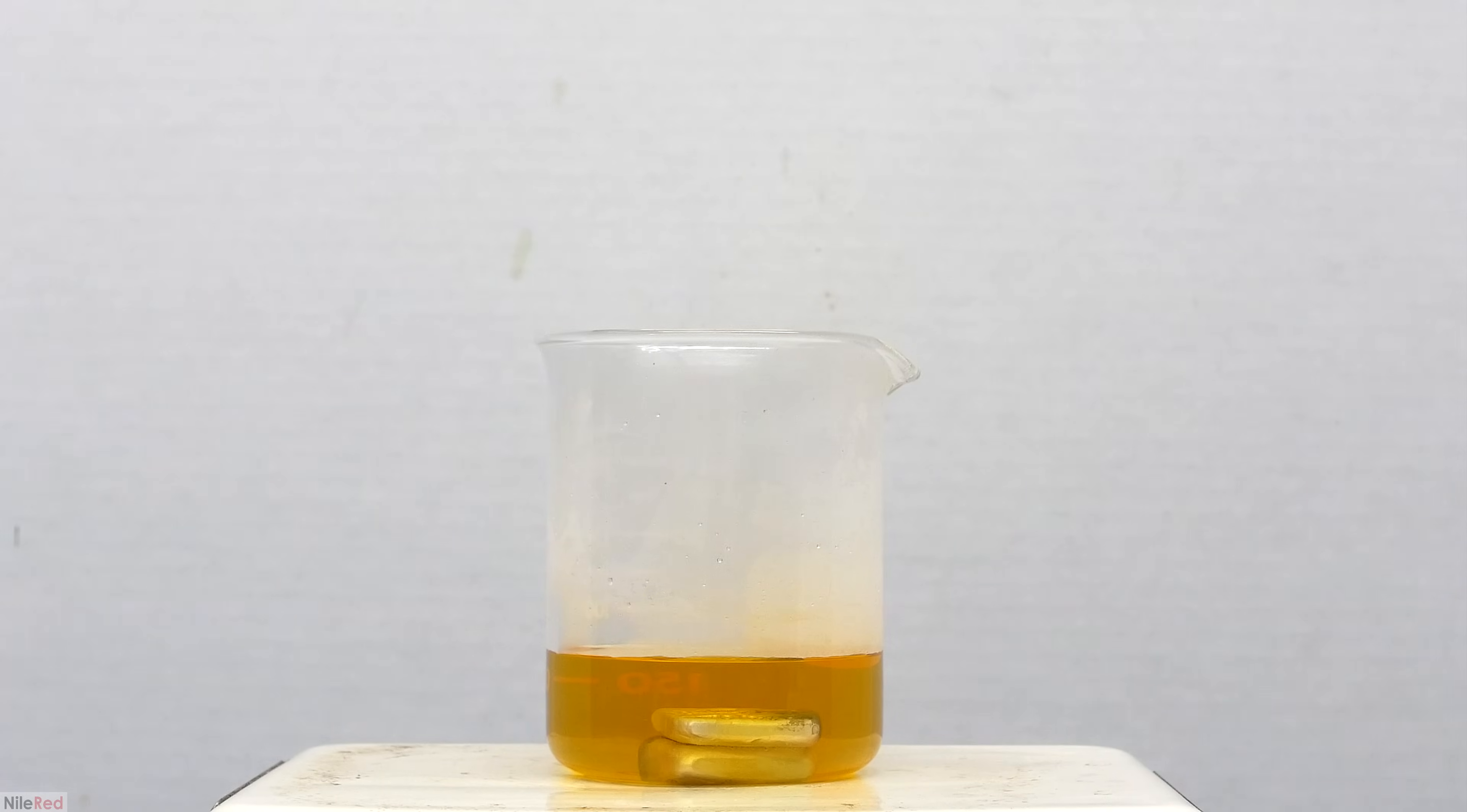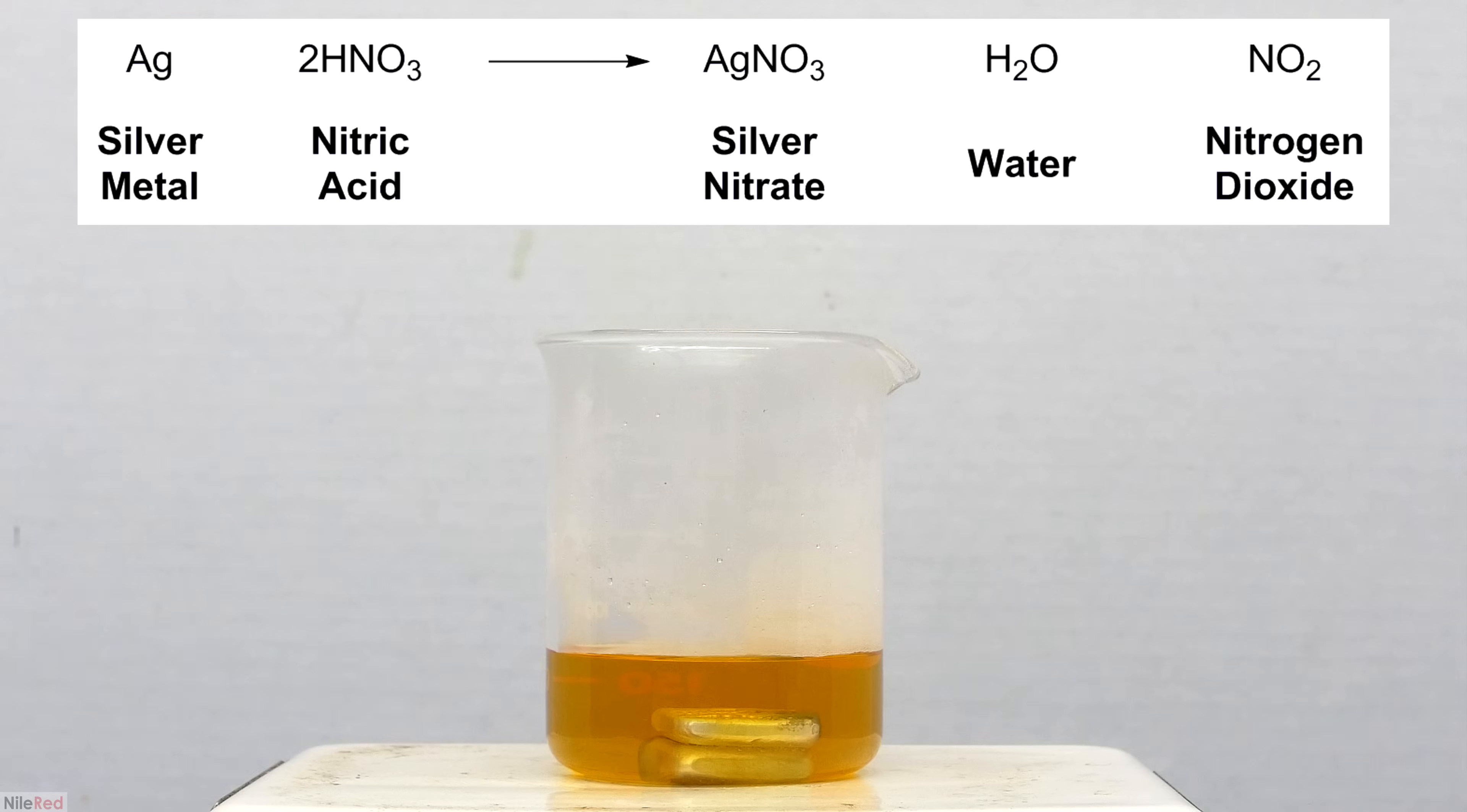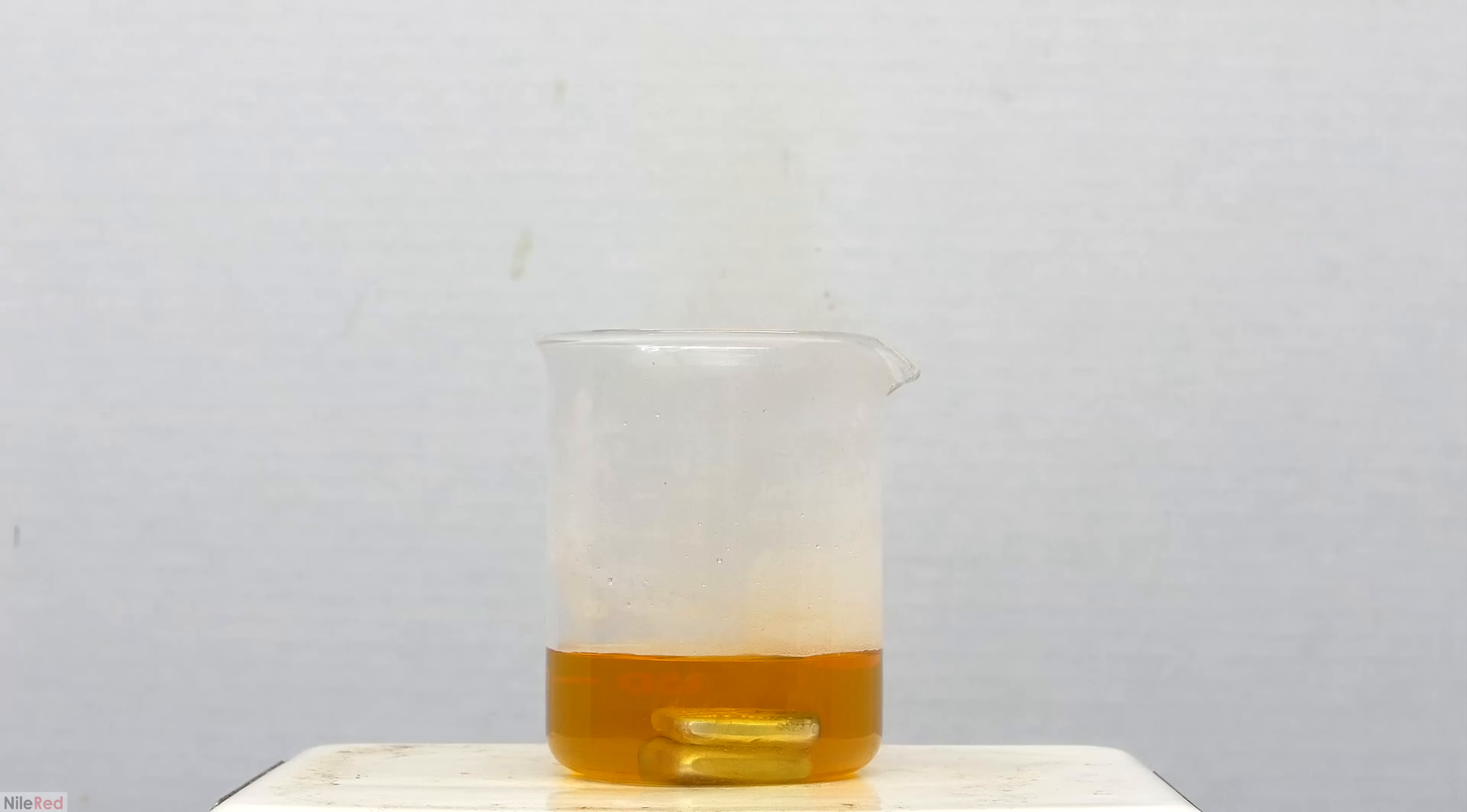As we continue to heat things, the color will transition from a yellow to an orange and eventually to a near red. The overall reaction is shown here where silver is reacting with nitric acid to form silver nitrate, nitrogen dioxide gas, and water. The nitrogen dioxide gas is what gives the solution its color, and the more nitrogen dioxide we produce, the darker the solution is going to get.